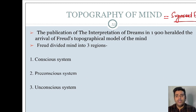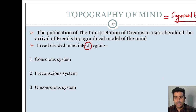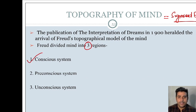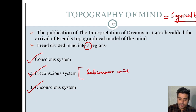Sigmund Freud divided the mind into 3 different regions. These are the Conscious Mind, the Preconscious Mind, and the Unconscious Mind. The Preconscious system is also called the Subconscious Mind or Subconscious System.